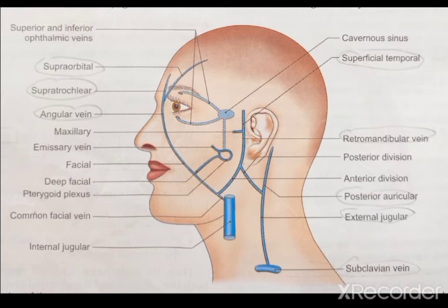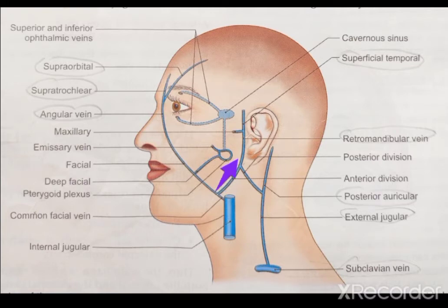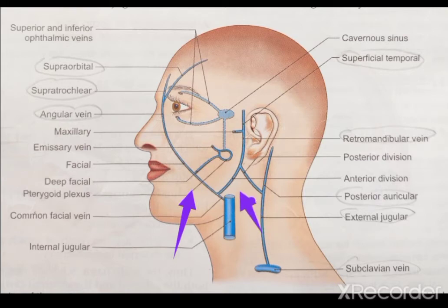The retromandibular vein divides into an anterior division and a posterior division. The anterior division combines with the facial vein to form the common facial vein, which drains into the internal jugular vein.